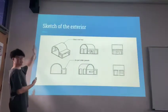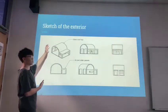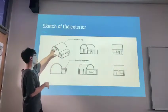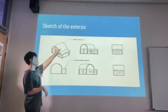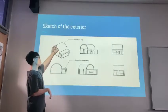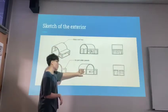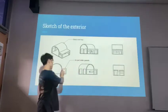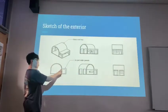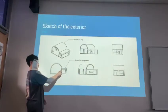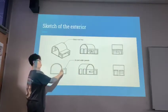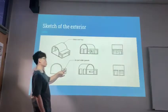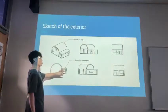This is our exterior sketch of the Sky Farm. As you can see, the top is made of glass, and the sides will also be made of glass. The side walls are built with concrete. For the roof, the solar panels will be placed on top of it.